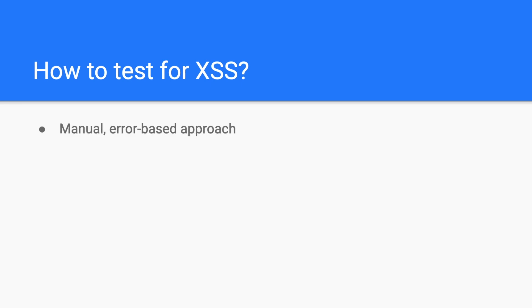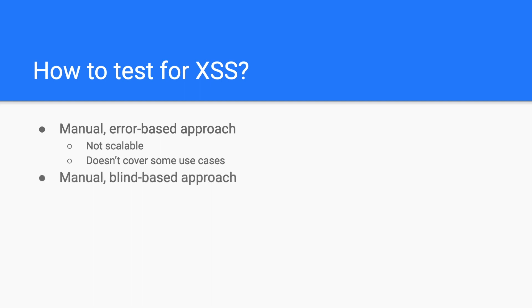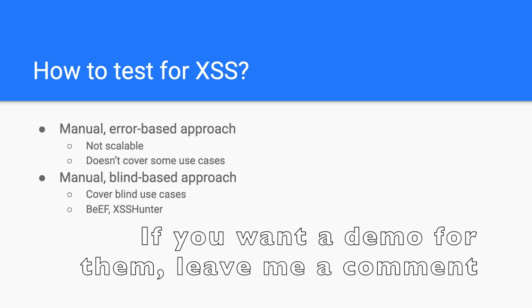There are many approaches to hunt and test for cross-site scripting. The first is manual error-based testing — the most basic approach. You inject a payload in all the fields that you find, and whenever an XSS triggers, you will see a pop-up. Although you can find vulnerabilities with this technique, it is somewhat tedious and there are many cases where you will not see a pop-up — for example, the XSS can trigger in a separate application run by an agent. This leads to the second approach: manual blind-based testing, where instead of relying on a pop-up, you inject a callback to a web server you control, and when a cross-site scripting triggers you get a callback to your server. Tools like BeEF XSS or XSS Hunter simplify this process and provide more information when the cross-site scripting triggers.